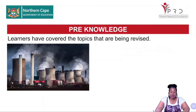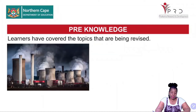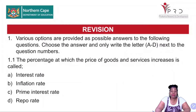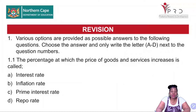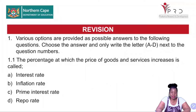All these are questions that we are revising today — we have already covered the topics. We will start with the multiple choice questions or short questions. Question 1: various options are provided as possible answers to the following questions. Choose the answer and only write the letter A to D next to the question numbers.